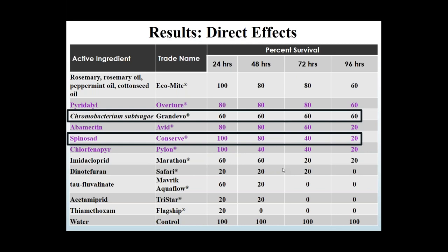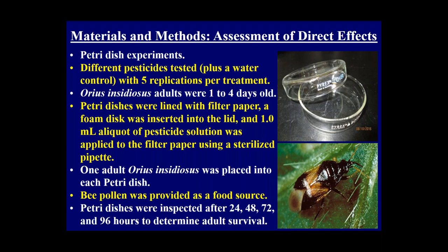Results from direct effects: Beauveria bassiana showed 100% survival from 24 to 96 hours — no direct effects. Metarhizium anisopliae, now called Brnevium, also had minimal toxicity with 80% survival after 96 hours. Grandevo showed about 60% survival from 24 to 96 hours. Conserve (spinosad) resulted in only 20% survival after 96 hours — whether due to the active or inert ingredients remains a question we continue to address.